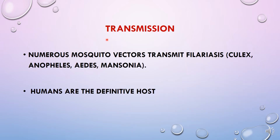Transmission of the causative agent: numerous mosquito vectors transmit the disease Filariasis. These are Culex, Anopheles, Aedes, and Mansonia. Basically, this is a mosquito-borne worm illness. Human beings are the definitive host because the adult worm resides in the human body.